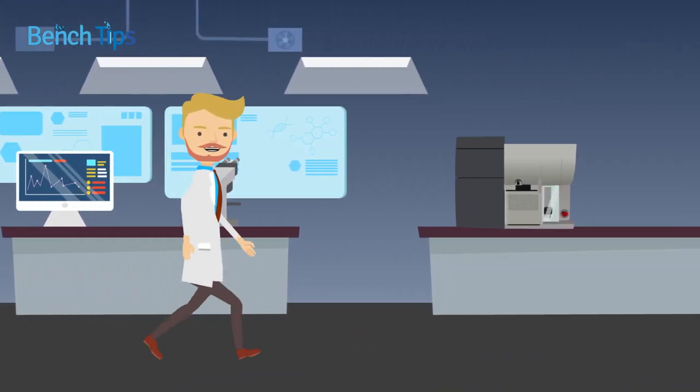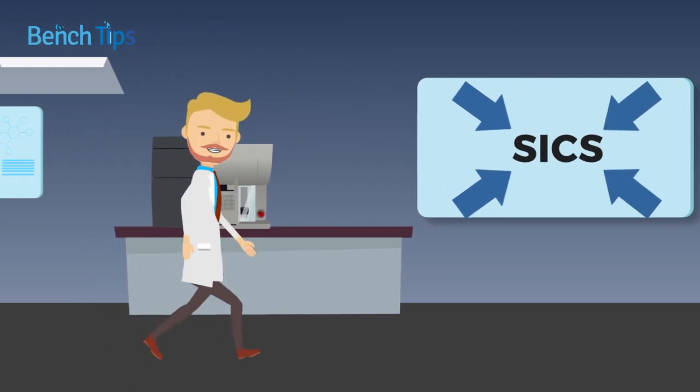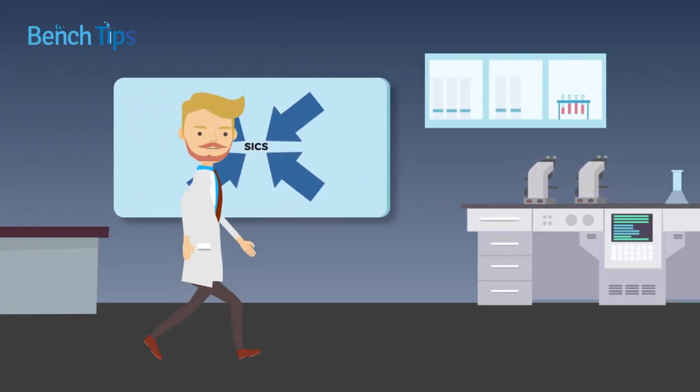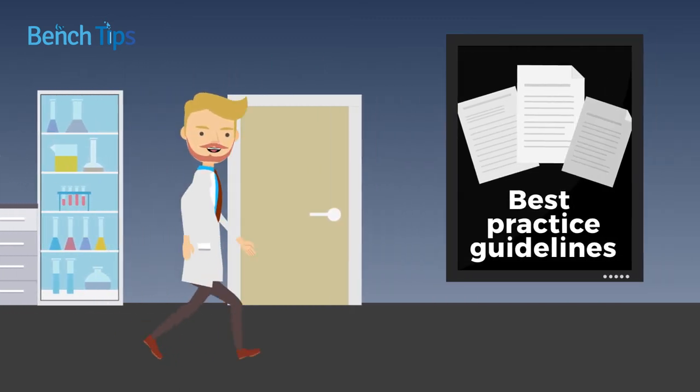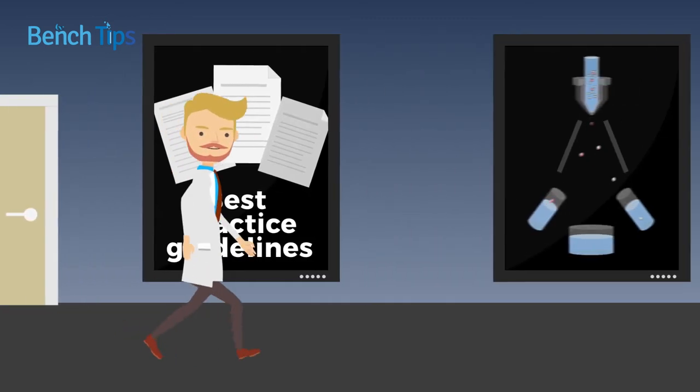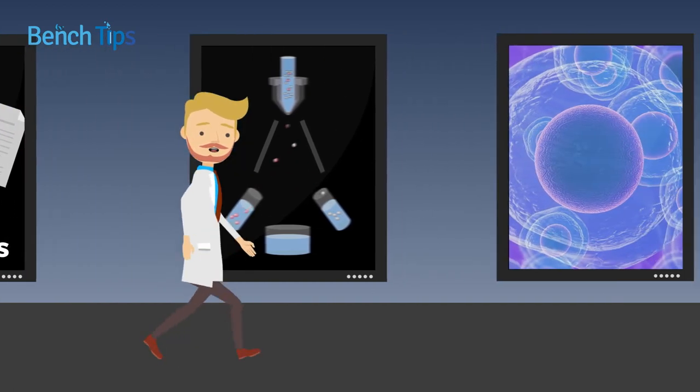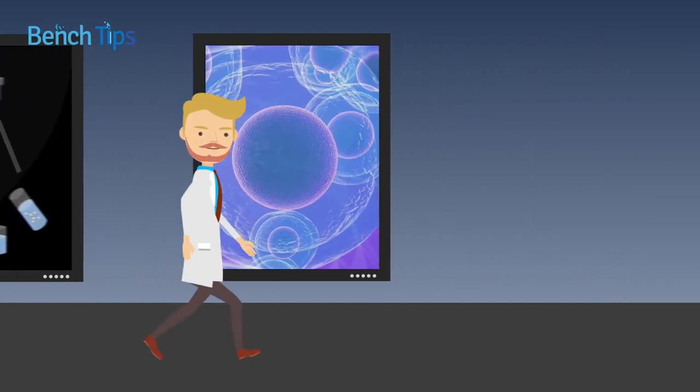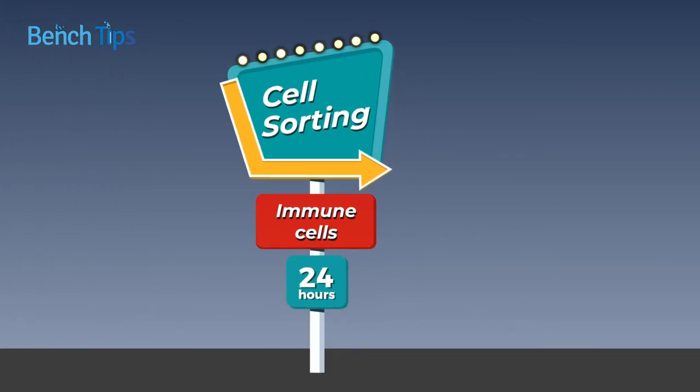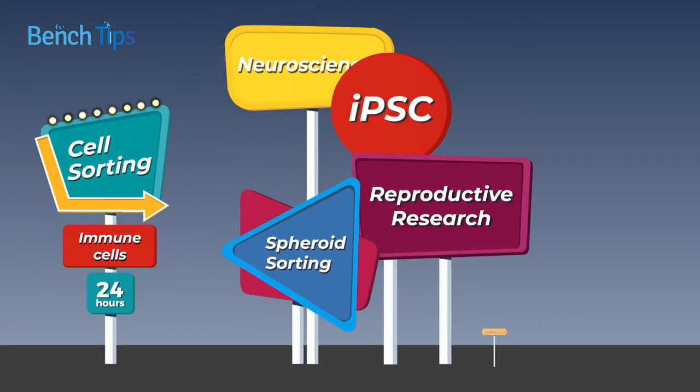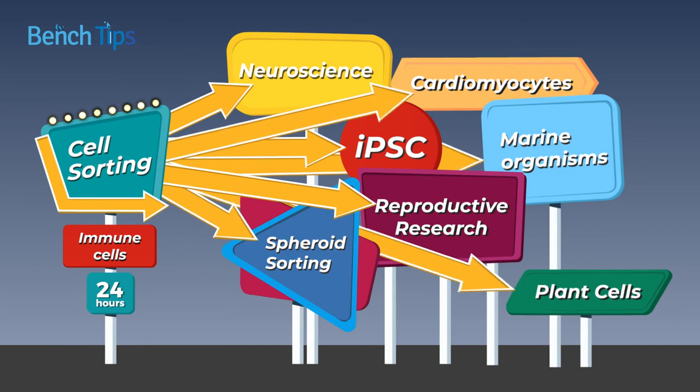Irrespective of how the sorted cells will be used, minimizing SIX is essential for downstream studies to be reliable and reproducible. While best practice guidelines have been established to reduce SIX during conventional sorting, they are often ineffective, particularly when sorting extremely large or sensitive cell types. This has restricted cell sorting mainly to the study of immune cells, despite its vast potential to advance many other fields of research.